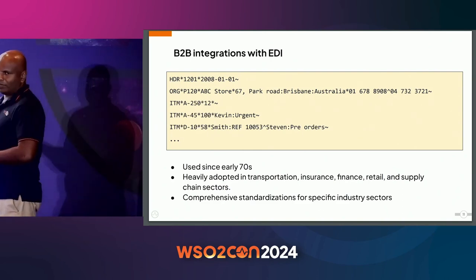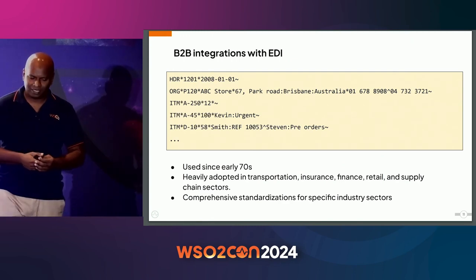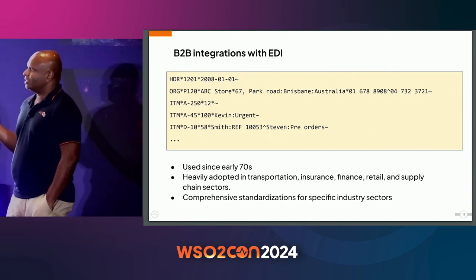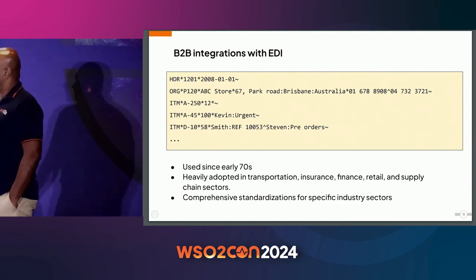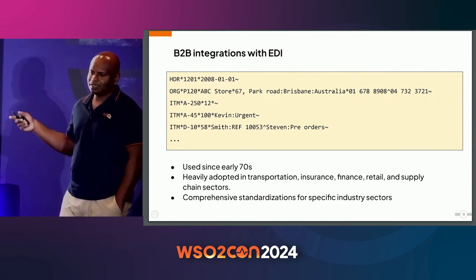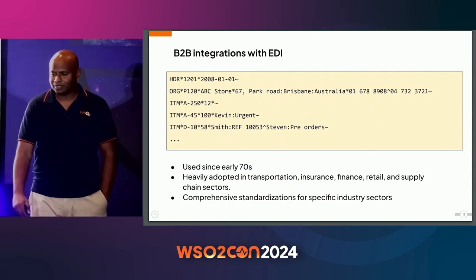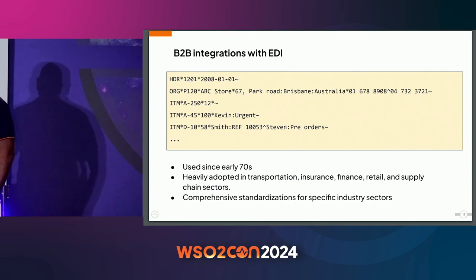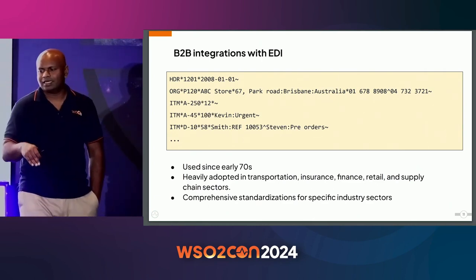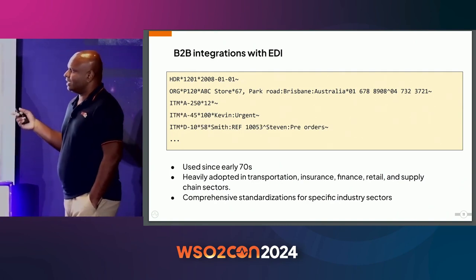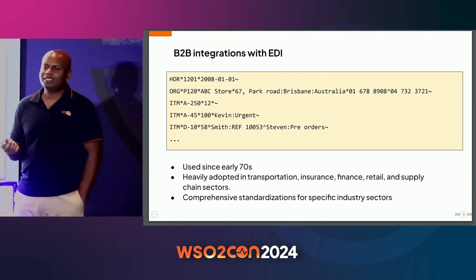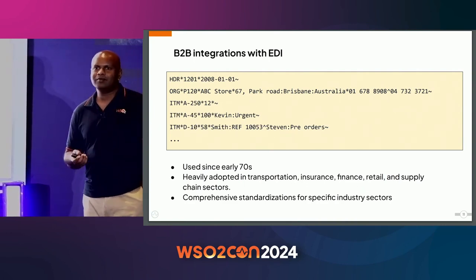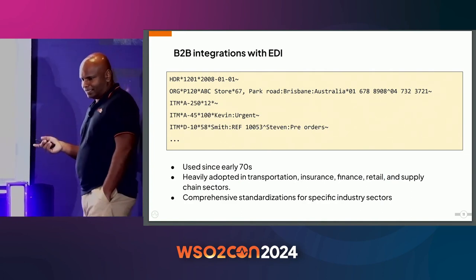You might wonder why we use this format instead of common formats like JSON or YAML. The reason is that EDI has been in use since the early 1970s and is heavily adopted across multiple industries — transportation, finance, retail, manufacturing, and so on. There are comprehensive standardizations developed for these EDI message types with a very detailed level of information. Because of this widespread adoption and standardization, it is very hard to use any other format for B2B interactions. There are some attempts — for example in healthcare the FHIR standard is coming up — but EDI-based HL7 is still heavily used.